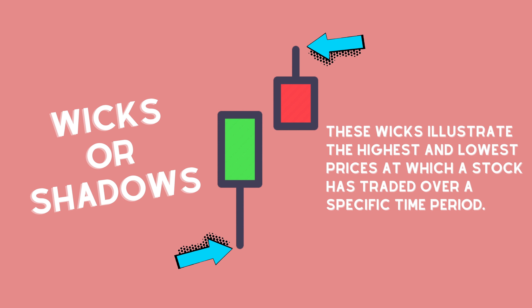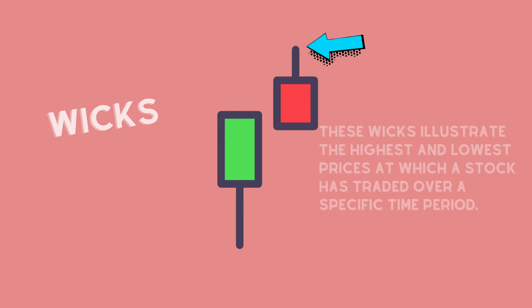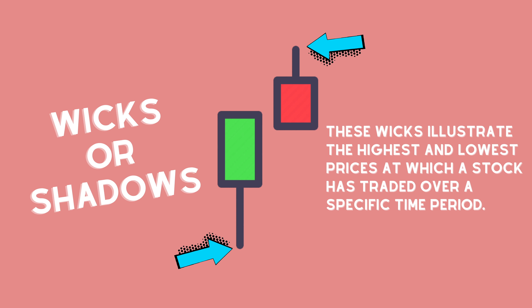The little pieces that you see coming out of the bottom and the top of the candlestick are called wicks or shadows — hence they look like a candle. The top wick means that it hit that high price and then it settled down; that's the highest price it hit for that moment. The bottom wick means that's the lowest price it hit for that moment and then it settled. So those are just the highest and lowest points that it hit in that timeframe.